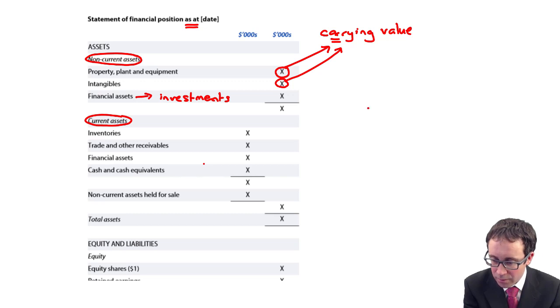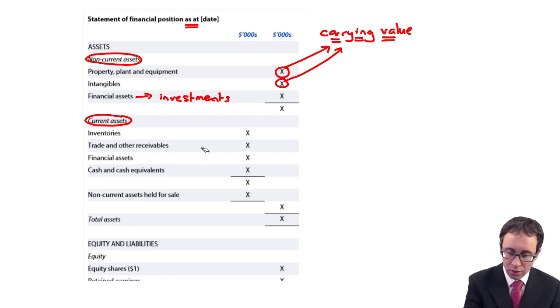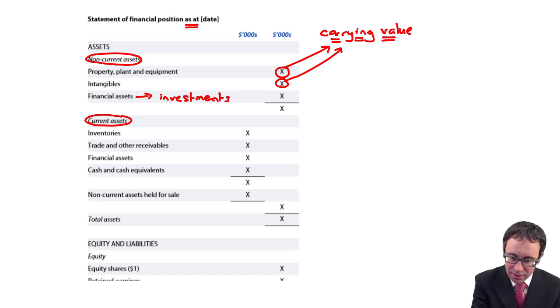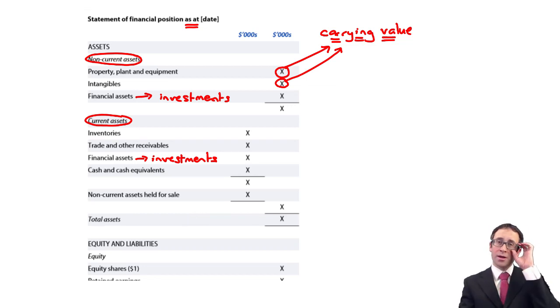So here with your intangible, it will be your cost less any accumulated amortization, potentially any impairments. We've then got bits and pieces in terms of your current assets. So inventory, receivables. You've also got your financial assets as well. So again, they are your investments.